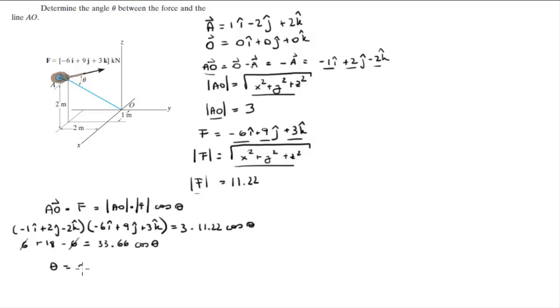So you get that theta is equal to the cosine inverse of 18 over 33.66, so theta is equal to 57.7 degrees.